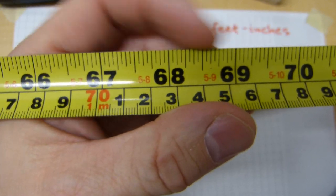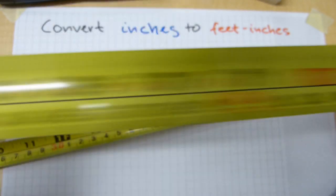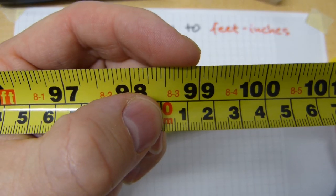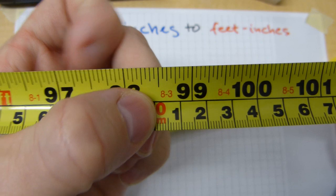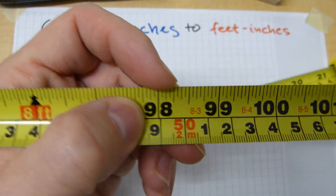On the entire length of the tape, 68 inches is 5'8". And 99 inches is 8 feet and 3 inches. It's right there on the tape measure, so they can be directly read off the tape.